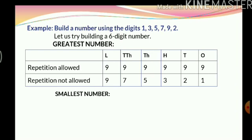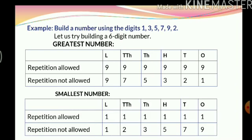Now let's build the smallest number. If repetition is allowed, we pick the smallest digit, which is 1, and repeat it in all place values, giving us 1,11,111. When repetition is not allowed, we arrange the numbers in ascending order, giving us 1,23,579.